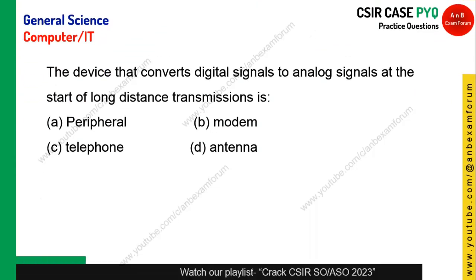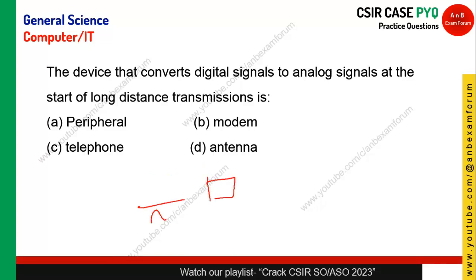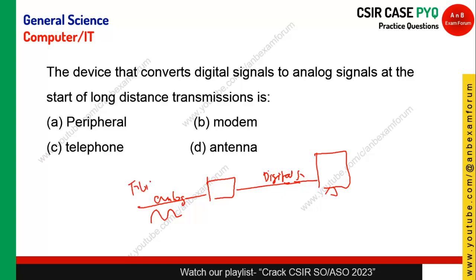The device which converts a digital signal to an analog signal at the start of long-distance transmission: on wires we use analog signals because they are cost-effective, whereas computers use digital signals. When you use the internet, you receive an analog signal — from fiber or Wi-Fi — and need to convert it to digital. This conversion is done by a modem, which performs modulation and demodulation. Option B is the correct answer.